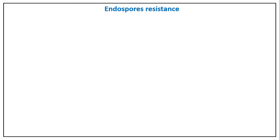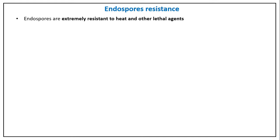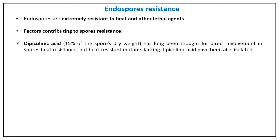Endospores are well-known for their remarkable resistance to heat and other lethal agents. Several factors contribute to this unique resistance. Dipicolinic acid (DPA), found in the core, was long thought to directly provide heat resistance. However, heat-resistant DPA-lacking mutants have recently been reported, leaving open questions about DPA's exact role.